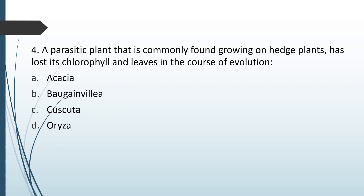A parasitic plant that is commonly found growing on hedge plants has lost its chlorophyll and leaves in the course of evolution. Options: Acacia, Bougainvillea, Cuscuta, Oryza. Which of these plants have lost their chlorophyll and leaves in the course of evolution and is a commonly found parasitic plant? The correct answer is option C — Cuscuta.